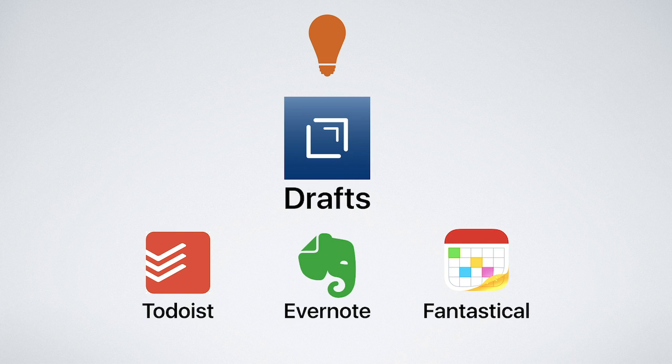Imagine I'm rushing around on the bus or the subway and I think I must capture this. As I'm typing I think it's a task, but then I realise it's actually an idea, which means it would go into my notes app. Normally you'd have to make that decision before you start typing. With Drafts you get the idea or the task out first, then decide where to send it — to Todoist, to Evernote, or to Fantastical to create a calendar event.